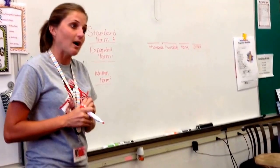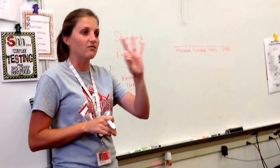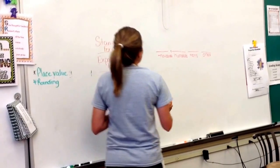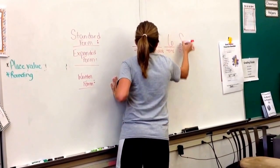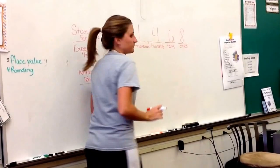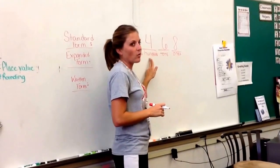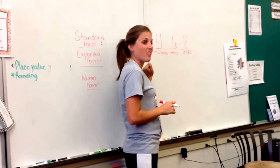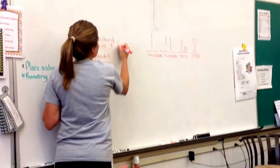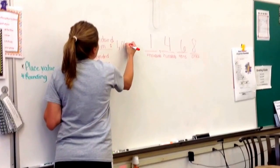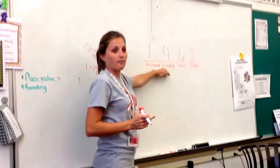When I look at place value, I can learn how to write numbers in three different ways. Let's say I have the number 1,468. That means I have 8 ones, 6 tens, 4 hundreds, and 1 thousand. When I write a number in standard form, I simply write it using its digits, like I see here in our place value chart.